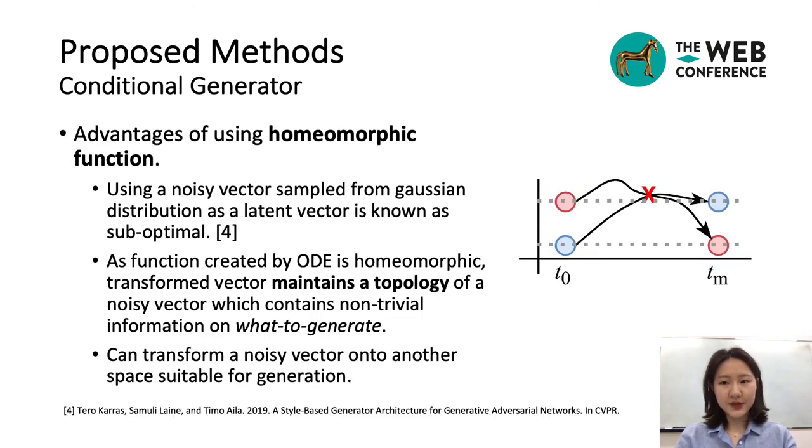To generate fake samples using a noise vector sampled from the Gaussian distribution is known as suboptimal. The initial input vector contains non-trivial information on what to generate, like conditions. So we'd like to maintain the relationships among initial input vectors while transforming them onto another latent vector space suitable for generation. It can be achieved by using the output of the homeomorphic function.